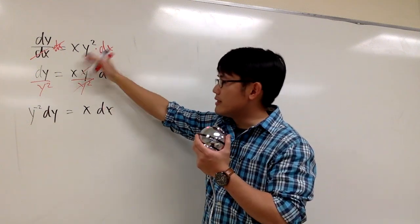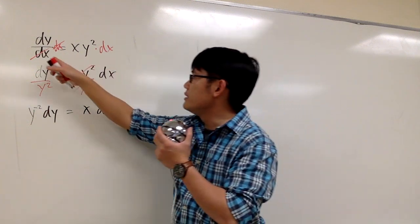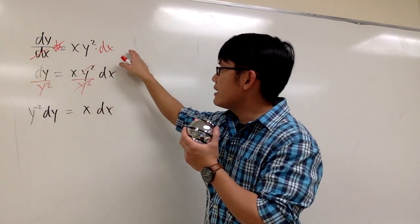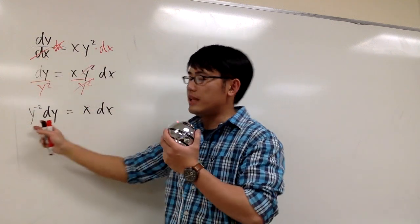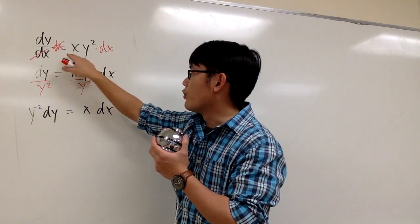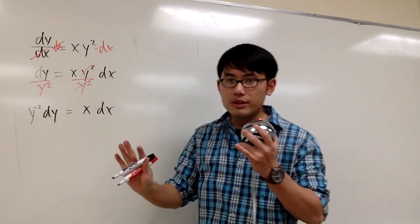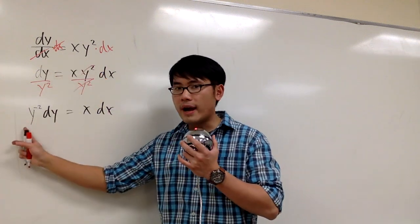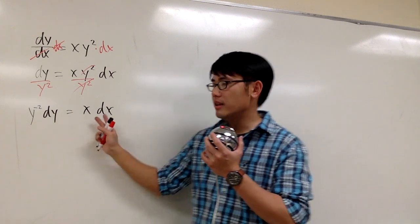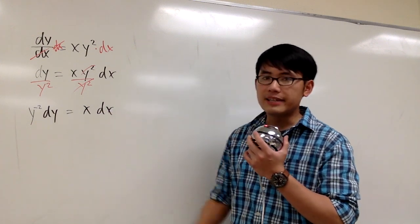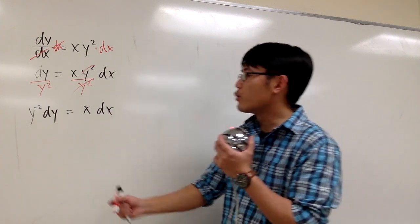And then you don't need to show these steps all the time because this is pretty easy to see. You put the dx onto the right-hand side, you divide the y squared onto the left-hand side. So you can just go from here to here. But the important thing is, once again, all the y and dy together on one side, x and dx on the other side. So then we can integrate both sides.